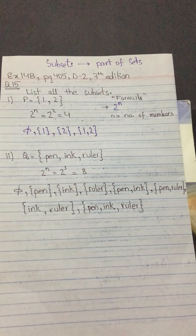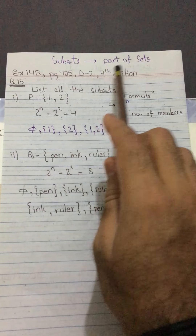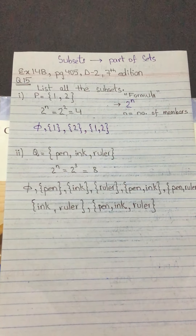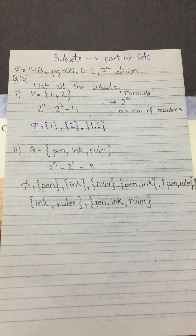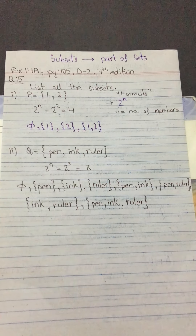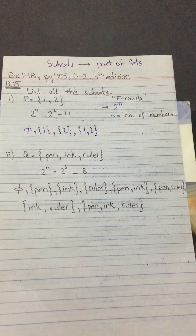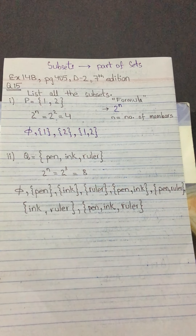Subsets are basically parts of sets, and in this question we have to list all the subsets. There are two parts: in the first part we have P equals {1, 2}, and in the second part we have Q equals {pen, ink, ruler}. These are the two sets for which we have to list all the subsets.